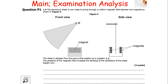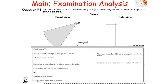This next question links periodic motion with electromagnetic induction. The aluminium sheet swings through a uniform magnetic field between two magnets. The presence of the magnetic field increases the damping. As the aluminium sheet passes through the magnetic field there is a change in flux linkage in the sheet, which induces an EMF and therefore an induced current. By Lenz's law this opposes the motion, so energy is lost from the system and the sheet slows down.